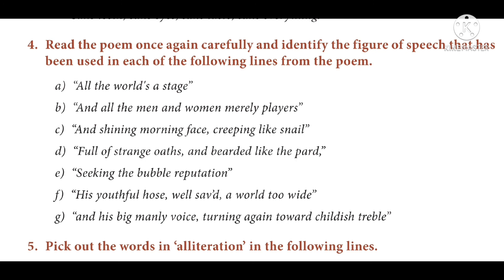'His youthful hose well saved, a world too wide for his shrunk shank' — it is also a metaphor because 'world' refers to the wide trouser; the hose was once a tight one but is now very big and wide because the body has become very thin and lean. 'His big manly voice turning again towards childish treble' — here there is alliteration: 'turning towards treble.' Alliteration means more than one word starting with the same consonant sound — the 't' sound in turning, towards, treble. Thank you.